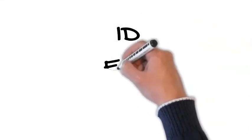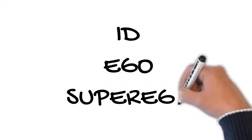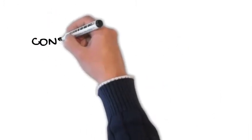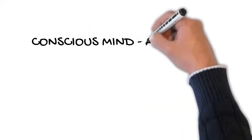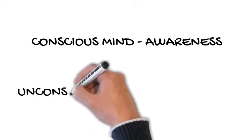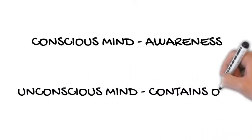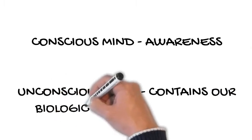Freud divided the personality into three components: the id, ego, and superego, and they were housed partially in the conscious mind, which is that which we're aware of, and partially in the unconscious mind, which is that which we're unaware of.